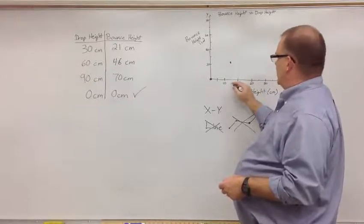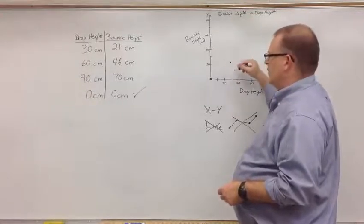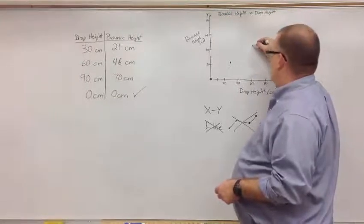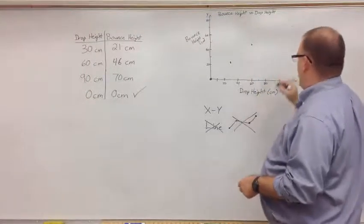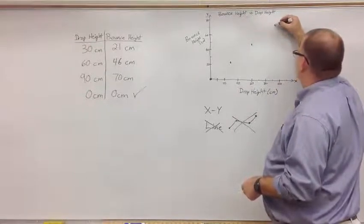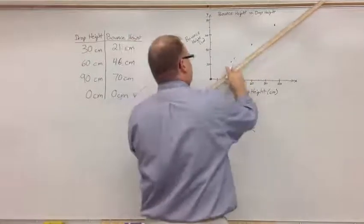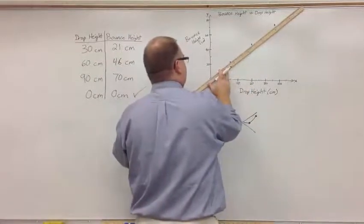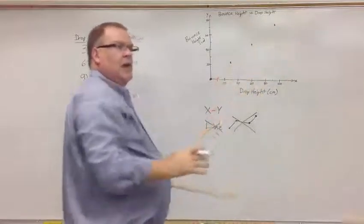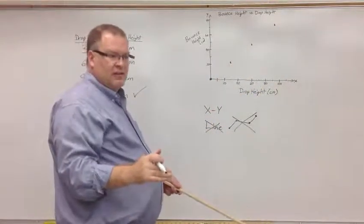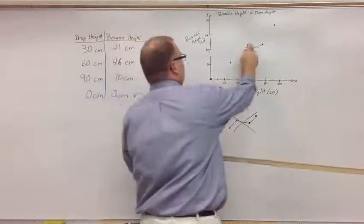All right, 30 centimeter drop height. This is the X variable. 21 centimeters for the bounce height. That's the Y. Then I have 60 and 46, about there. And then I'm going to have 90 and 70, right about there. Now these look to be on a line, but they really aren't. If you try to line them up, all four of them up, they aren't quite all in the center. They're very close though, and that's probably due to the inaccuracy of my graph, is making it look even better than it is, and would be on graph paper.